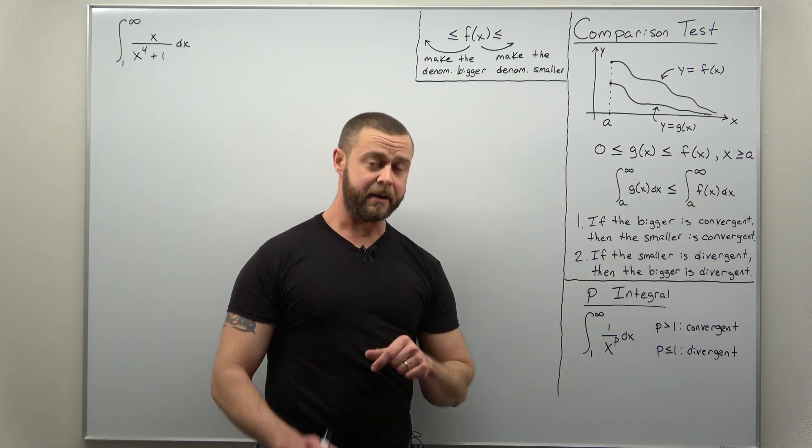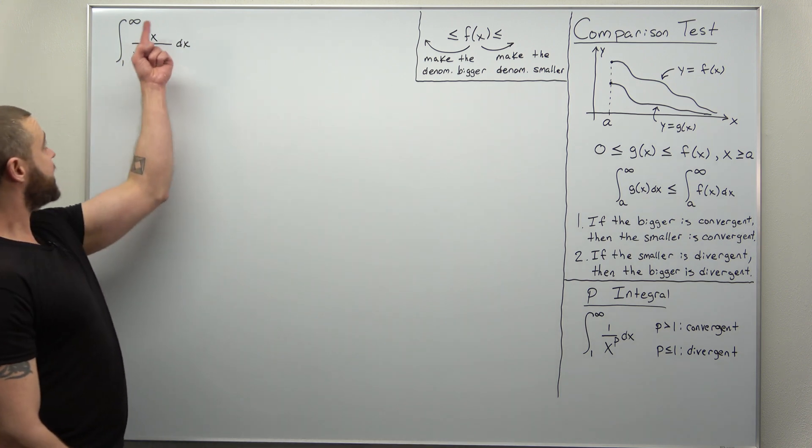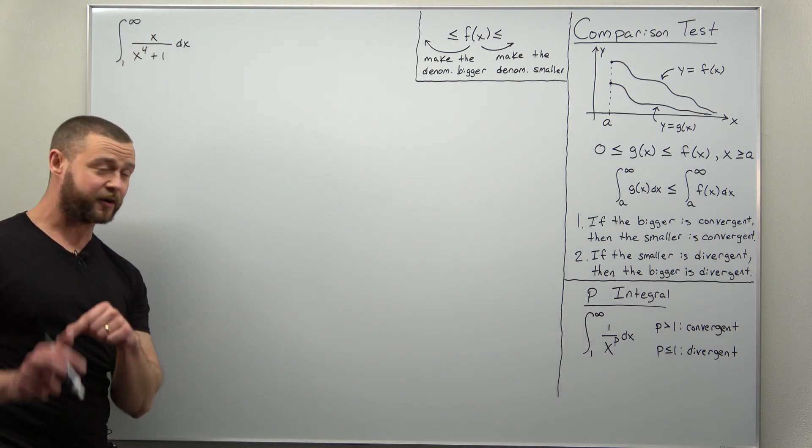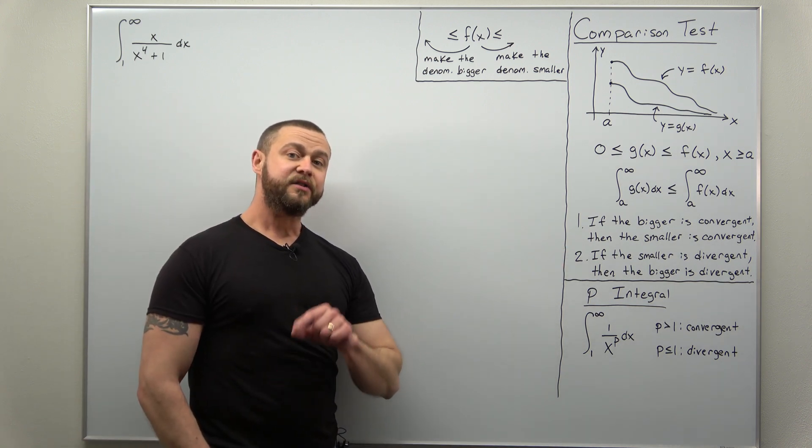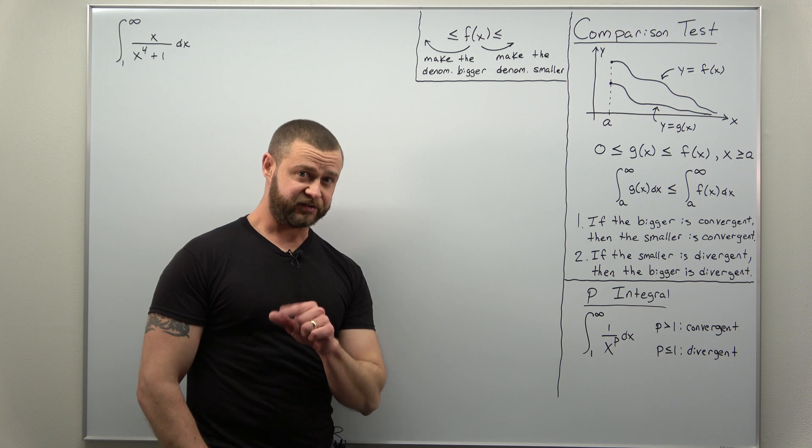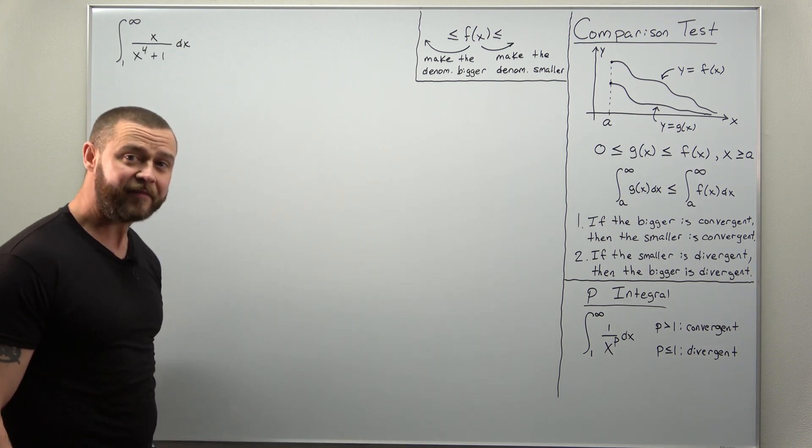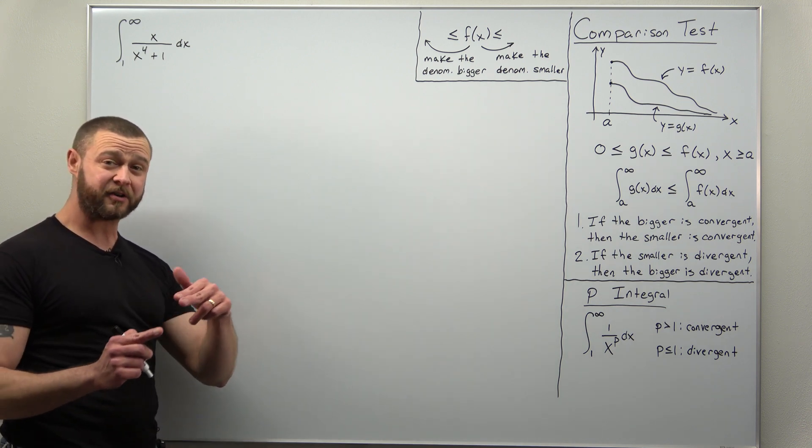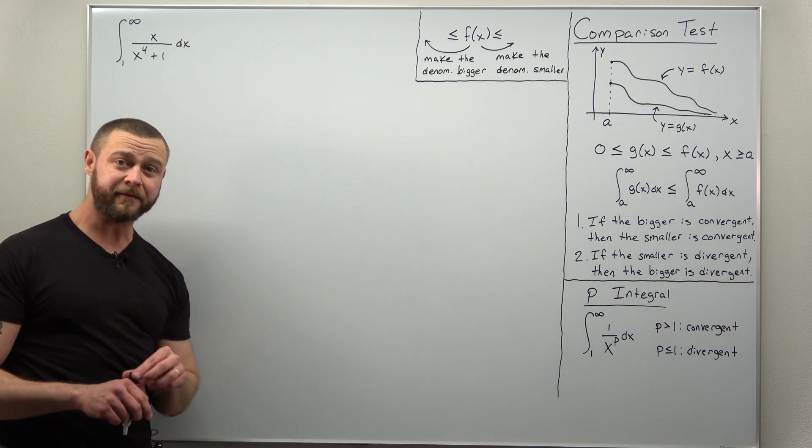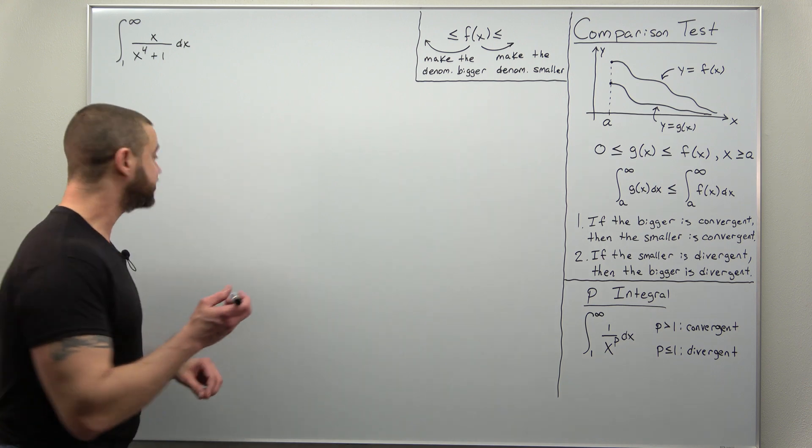And likewise, if we think our improper integral is divergent, we should look for a smaller improper integral that is divergent. Alright, now how do we have that idea of knowing if we think our improper integral might be convergent or divergent? I like to do what's called a large x estimation.